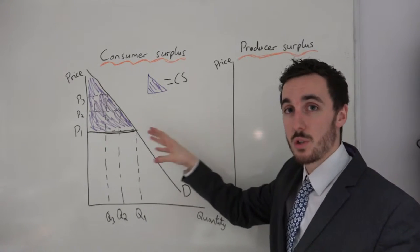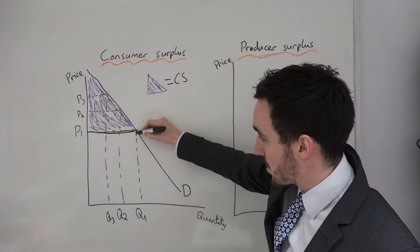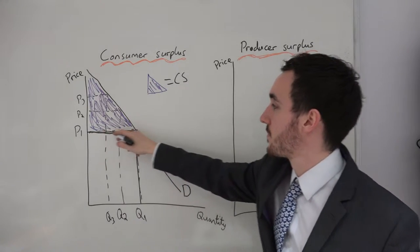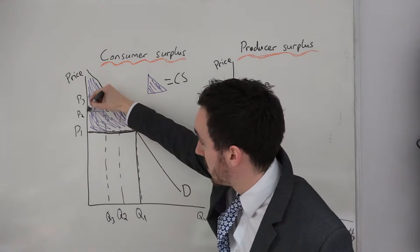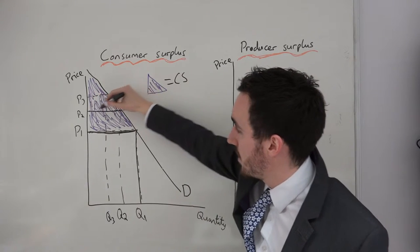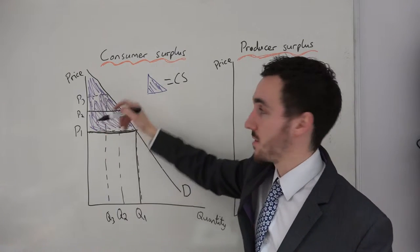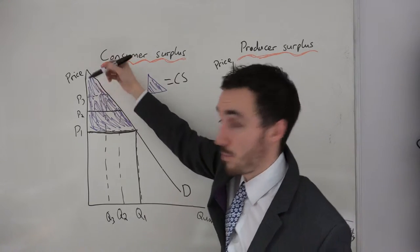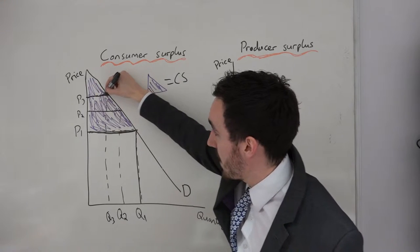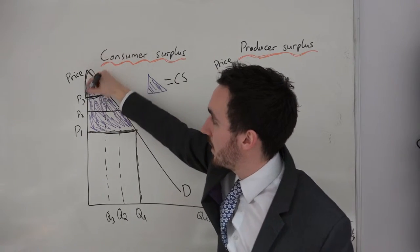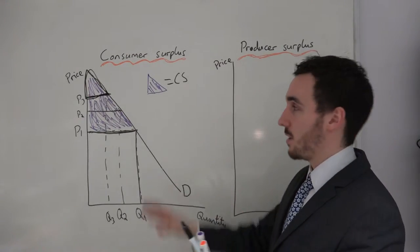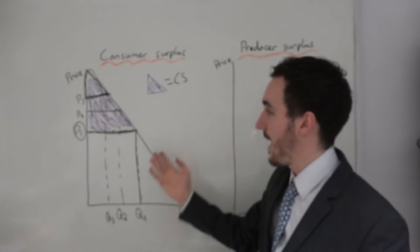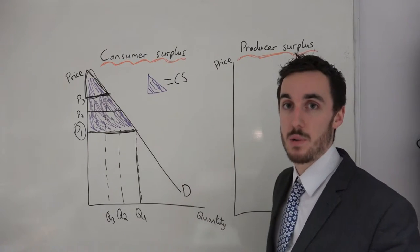We can also look at individual consumer surplus. Any consumer only willing to pay the market price would have no consumer surplus whatsoever. At a price of P2, any consumer willing to pay more than P2 is getting the surplus above that price. If the price were P3, we'd have a consumer surplus triangle accordingly. But the main thing to take away is: at a market price of P1, anything above that price level is consumer surplus.